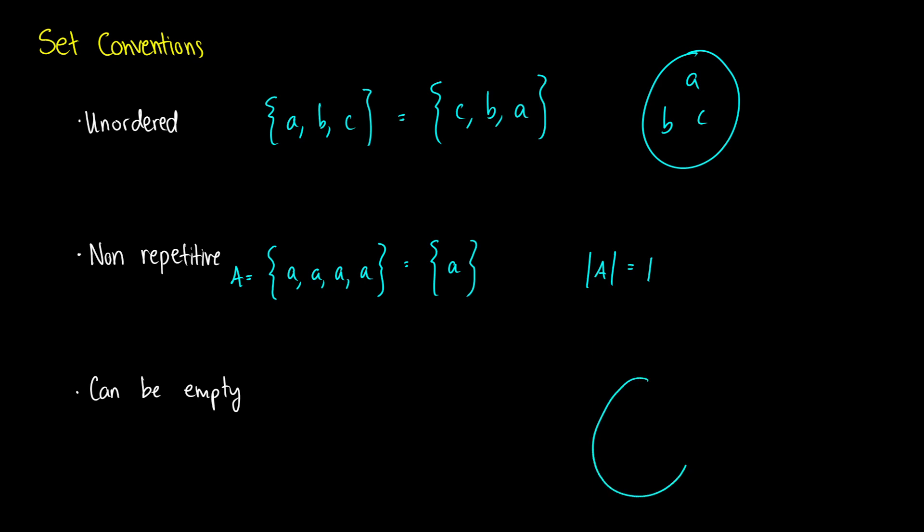Sets can also be empty. So you can imagine a circle with nothing in it. There's two ways we can write this: curly braces with nothing inside, but the typical convention is this notation here, which is the empty set, a circle with a line through it. That just means there's nothing in our set. This could be like the intersection in English of all nouns that are also always verbs at the same time.